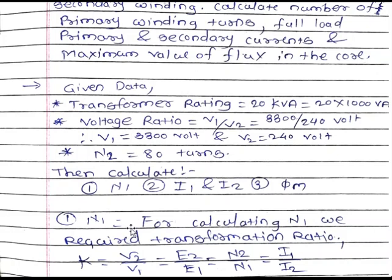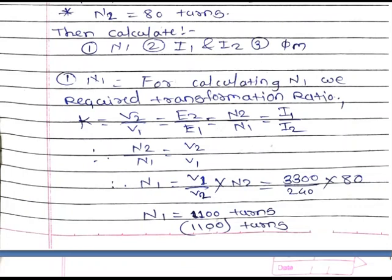First we calculate the value of N1. For calculation of N1 we require the transformation ratio. Transformation ratio K is equal to V2 by V1, which equals N2 by N1, which equals I1 by I2. We take the ratio K equal to N2 by N1 equal to V2 by V1. In the given example, N2 is equal to 80 turns — that is the transformer secondary winding turns.